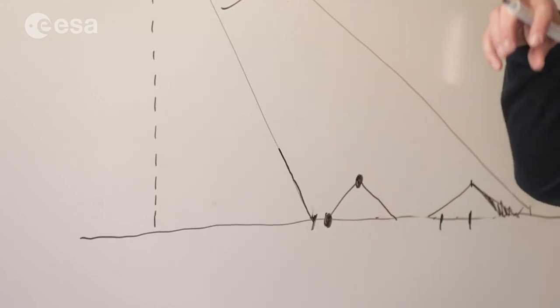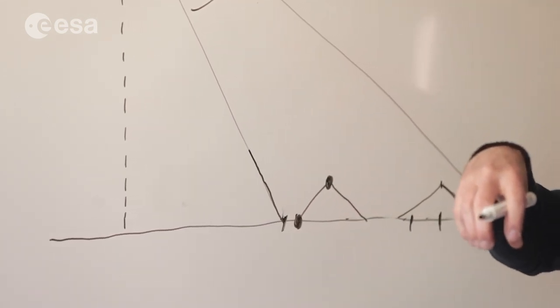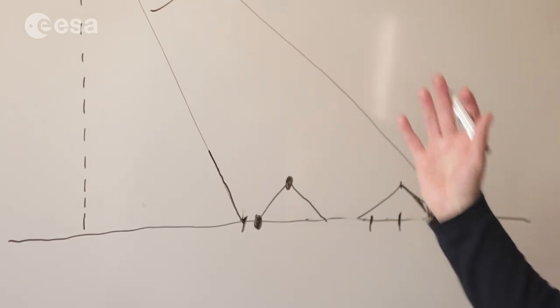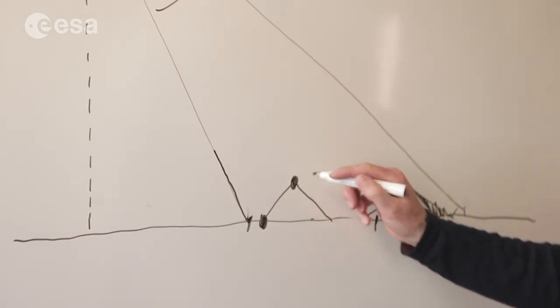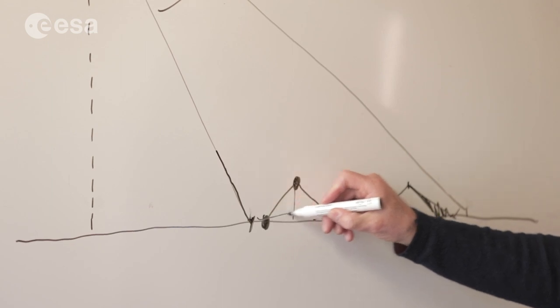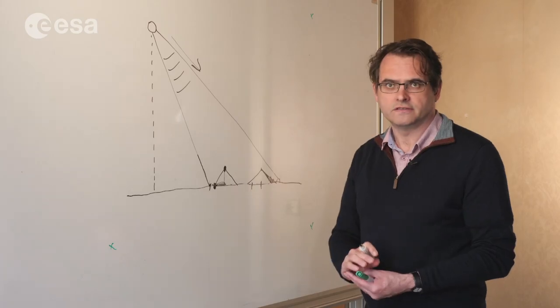For discrete tall objects like buildings or individual trees, in an image, this would look like they're actually leaning over. You would see the entire length of that object scattered onto the surface in front of it.